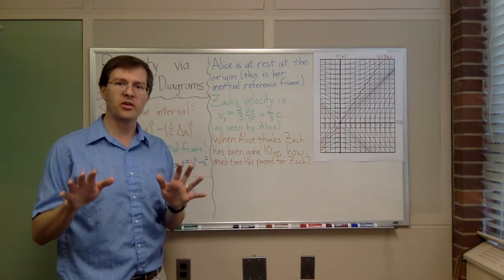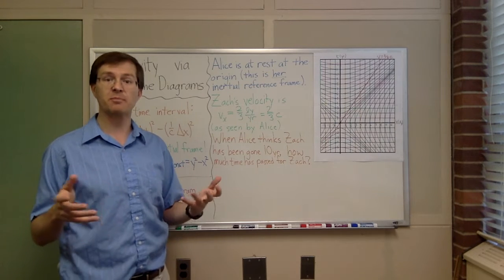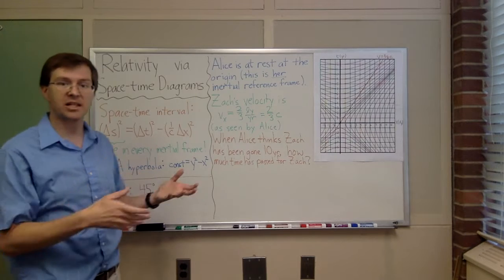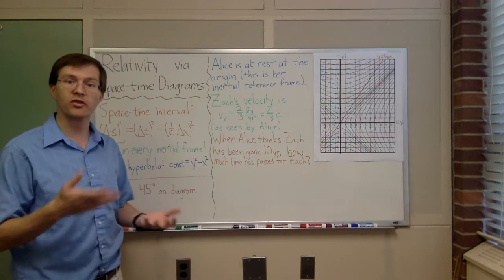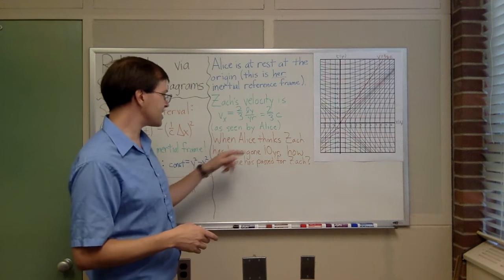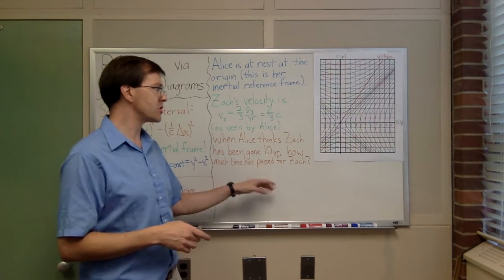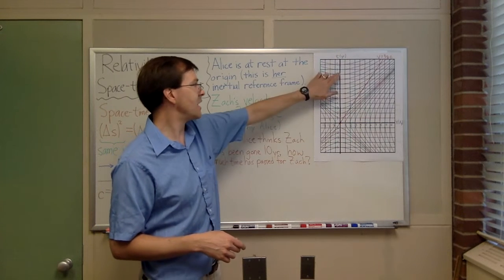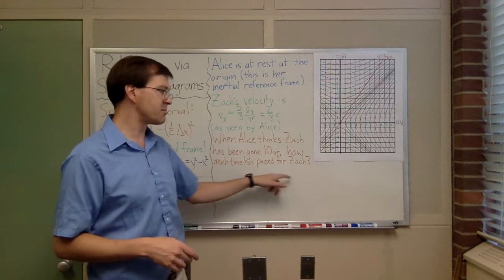Let me show you really quickly how I could ask a specific question using the math of the spacetime interval to ask a question about different observers' experience of time. Here I said, when Alice thinks that Zach has been gone for ten years, so ten years have passed after Zach left Alice, passed by Alice, that would be along here. How much time has passed for Zach?